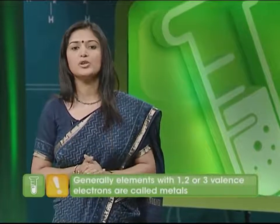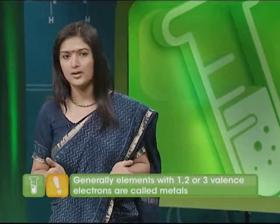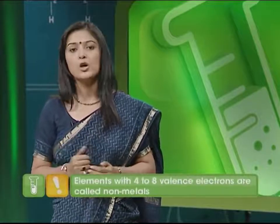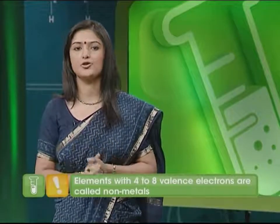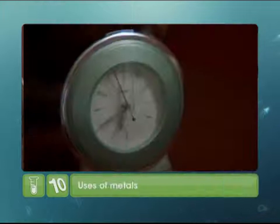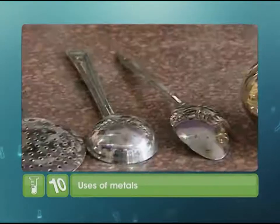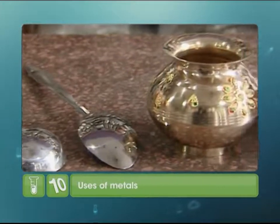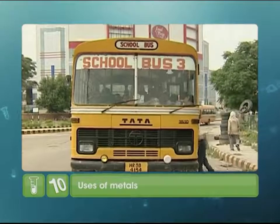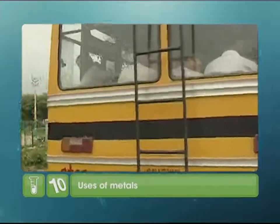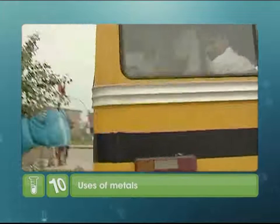Those elements which have one, two or three valence electrons are called metals, and those with four to eight valence electrons are known as non-metals. Metals and non-metals are not just categories that appear in your textbooks; in fact, they are a crucial part of our everyday existence. Be it the alarm clock that wakes you up in the morning, or the utensils that your mom uses to cook food, or the bus ride that you take to school — you'll find yourself using and relying on metals.